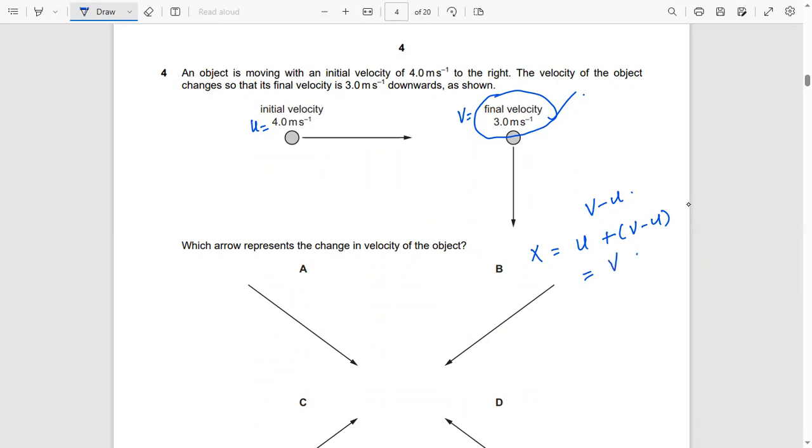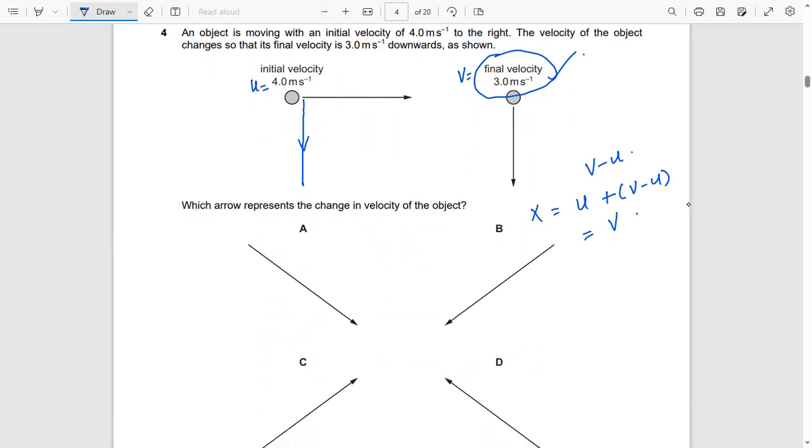If this is the resultant, so if we apply the head-to-tail rule, you should know that the head of the first vector joins with the tail of the second vector. And the tail of the first vector will join with the head of the second vector to give you the resultant.